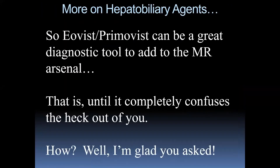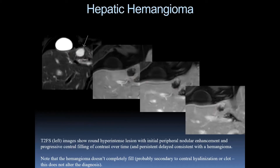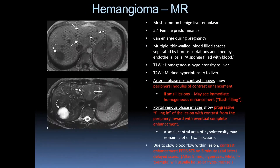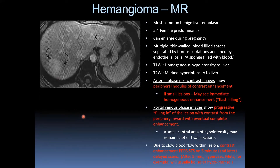Hepatobiliary agents can be a great diagnostic tool — until they completely confuse things. Here we have a T2-bright well-defined lesion with nodular progressive enhancement over time and central filling — hopefully everybody's thinking hemangioma, slam dunk. Note that the hemangioma doesn't completely fill in on delayed post-contrast images, probably secondary to hyalinization or clot — this does not alter the diagnosis. Another example: T1 dark, T2 bright, arterial phase peripheral nodular enhancement with filling in, then persistent post-contrast enhancement due to slow flow.